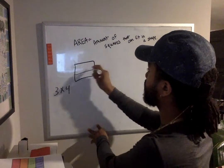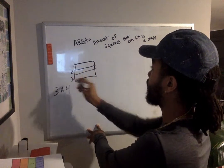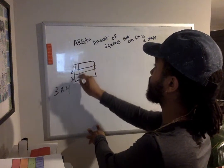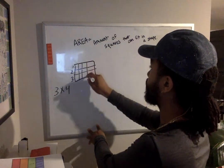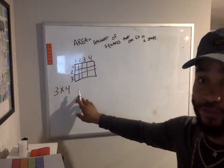So that's three rows. One, two, three. And then we have four columns. One, two, three, four. One, two, three, four. So this is a three by four.